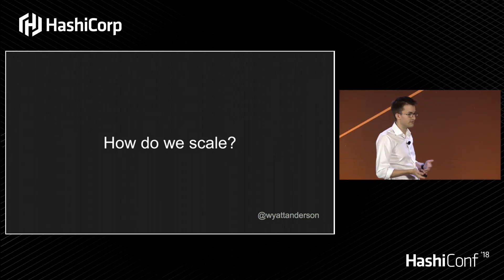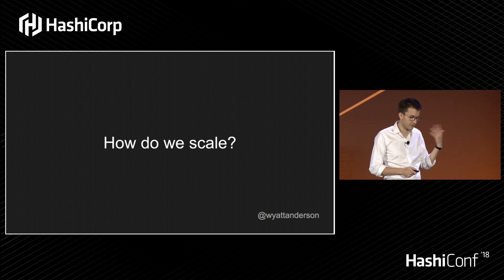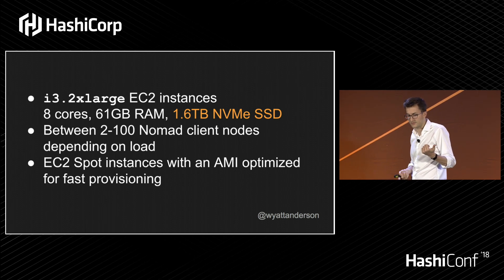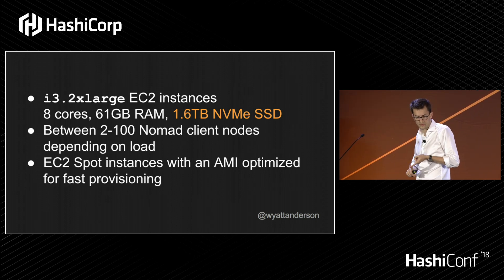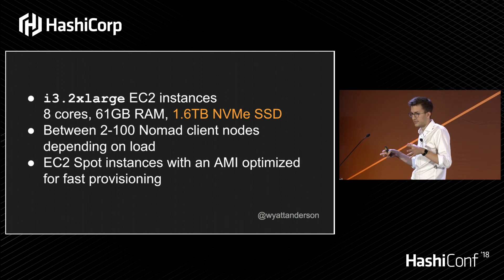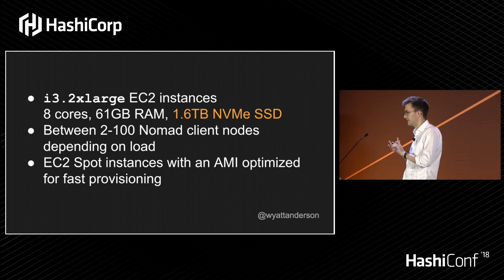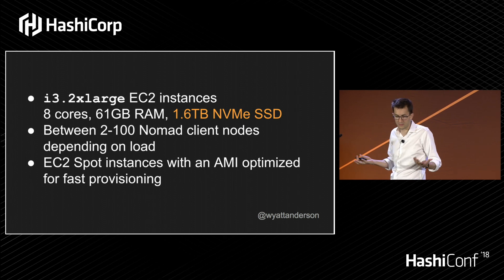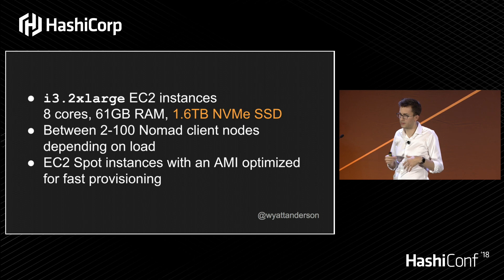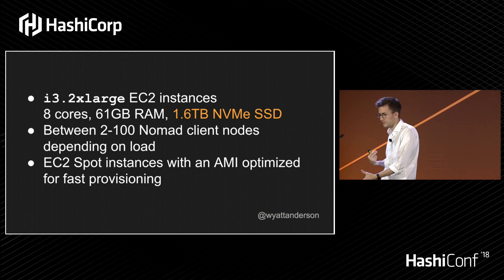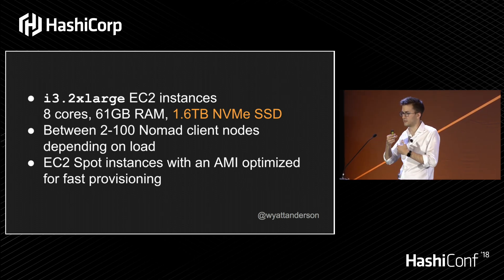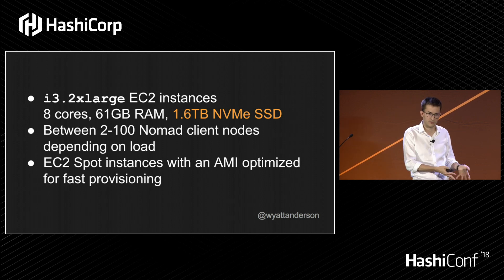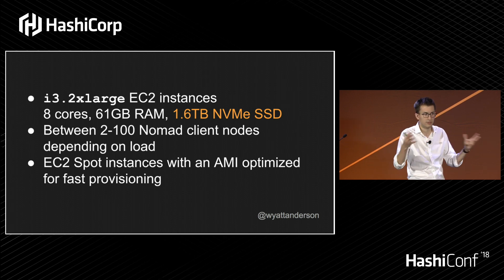How do we scale this solution? We use i3 2xl EC2 instances. The i3 instance types are for very IO-intensive workloads — the instances have about 8 cores, 61 GB of RAM, and 1.6 terabytes of directly attached NVMe SSDs. That's not a network block device, that's an SSD physically attached to the server, so you get like 80,000 IOPS. We're very resilient to failures and don't care about data loss or nodes disappearing, so we can use that ephemeral storage really effectively. It makes IO very fast, all those Docker image operations very fast, and benefits our test runs because if we're doing integration tests with databases or storage systems, we can use that local storage and extremely high RAM.